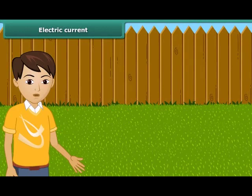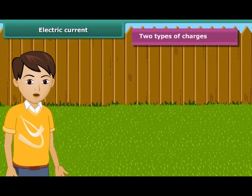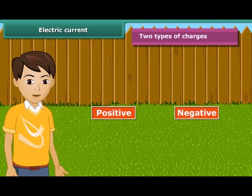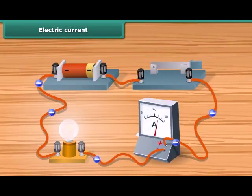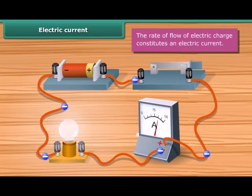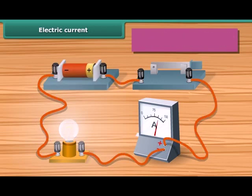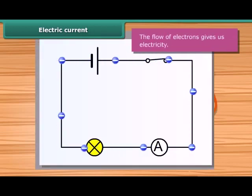We have just studied about electric charges and the forces they exert on one another. We have learned there are two types of charges: positive and negative. When charges transfer from one body to the other, the bodies are said to be charged. The moving or flowing charges produce an electric current. An electric current consists of a movement of negative charges, that is, electrons. The flow of electrons gives us electricity.